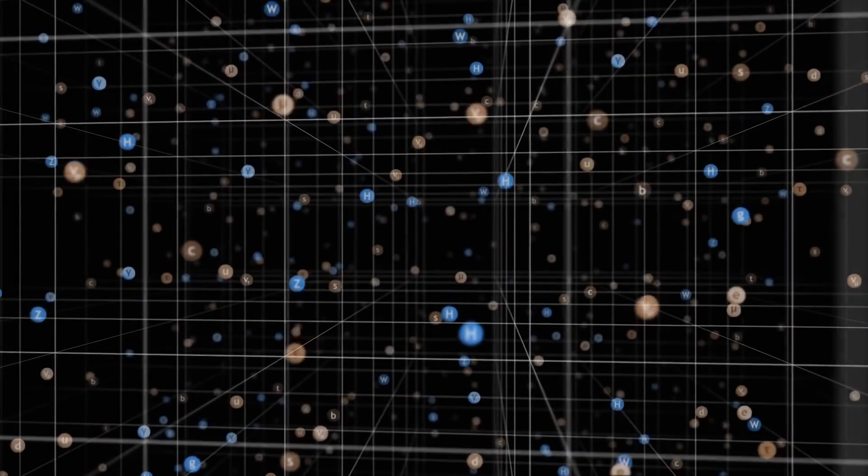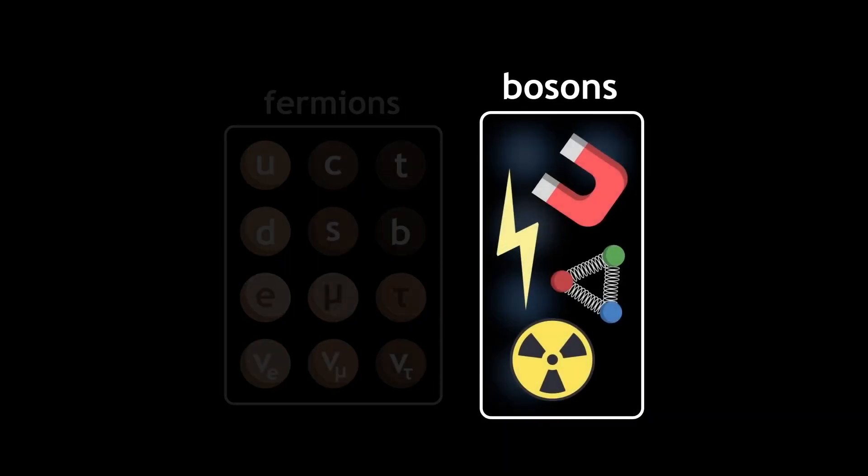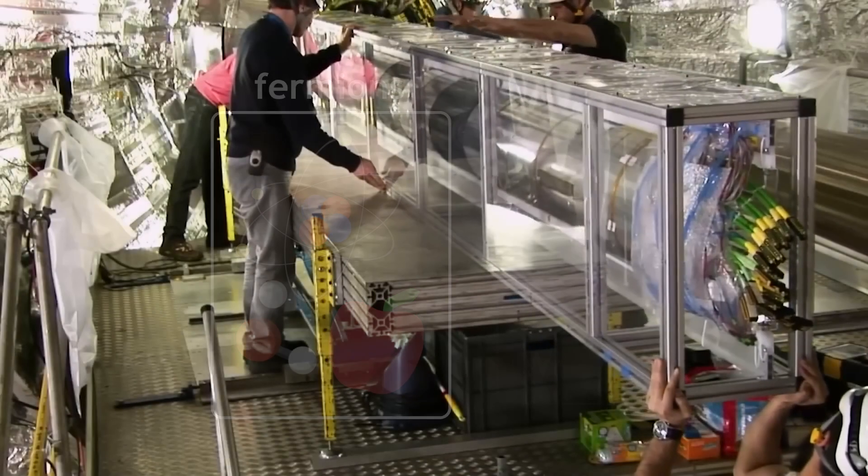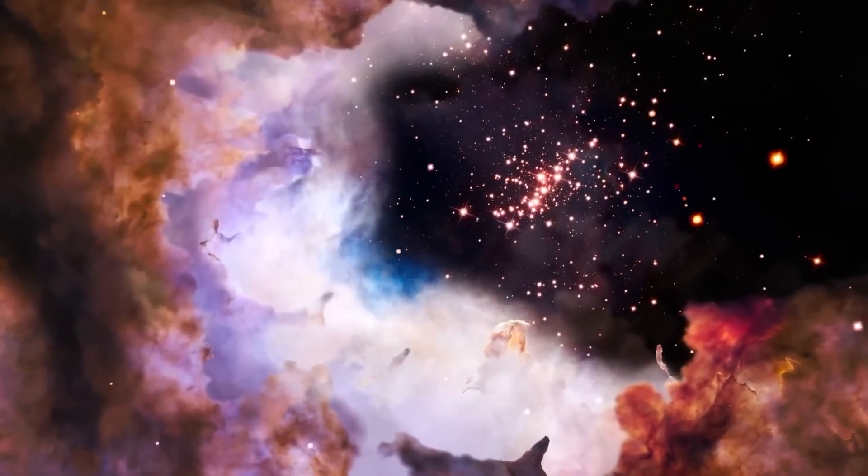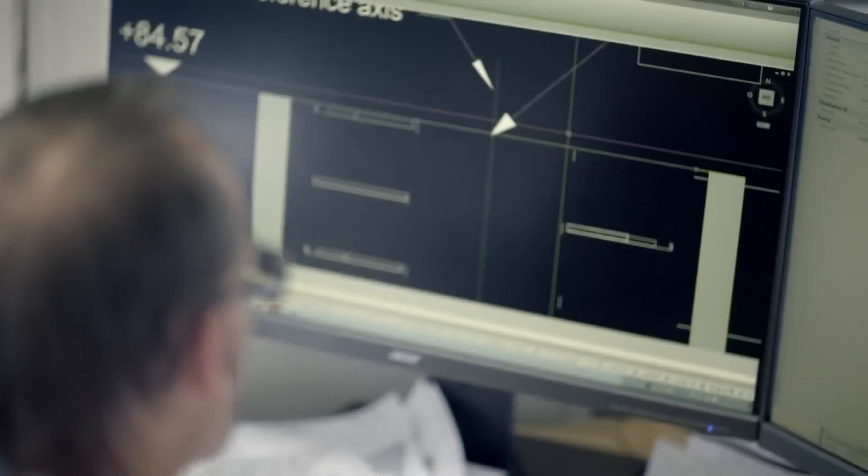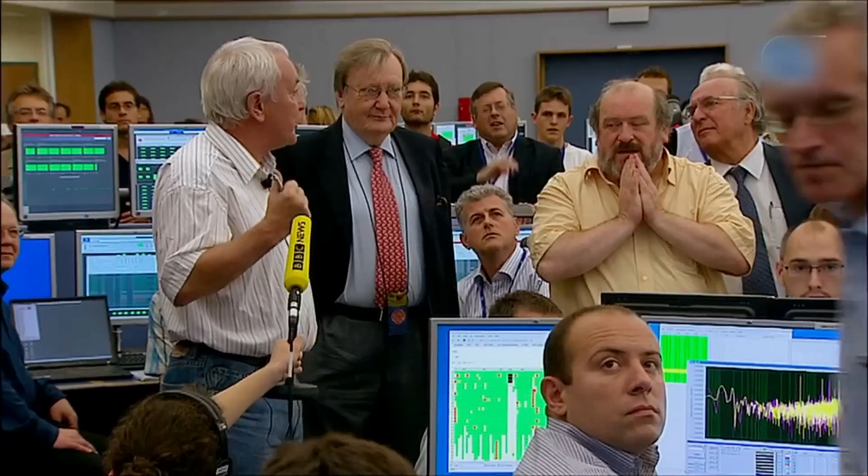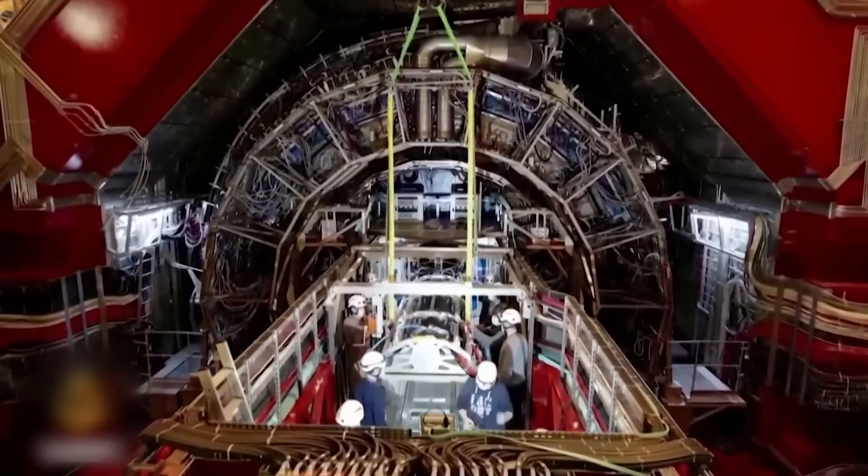Supersymmetry, a theoretical framework that posits the existence of a symmetry between particles with integer spin (bosons) and particles with half-integer spin (fermions), represents a key area of investigation at CERN. This symmetry, if confirmed by experimental evidence, could provide a deeper understanding of the fundamental forces of nature and help reconcile discrepancies between theoretical predictions and observed phenomena.